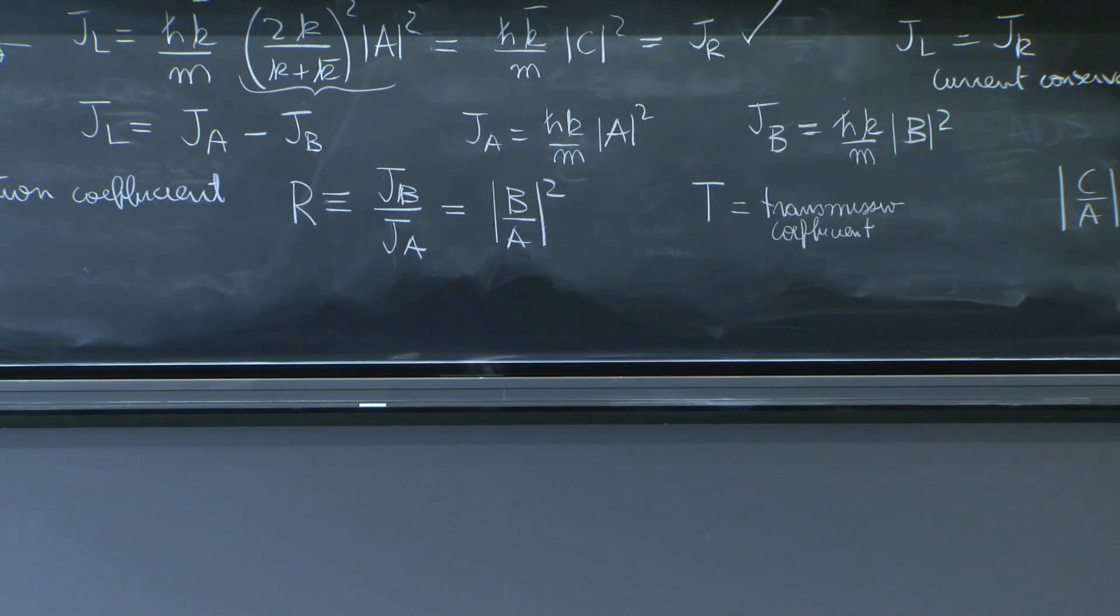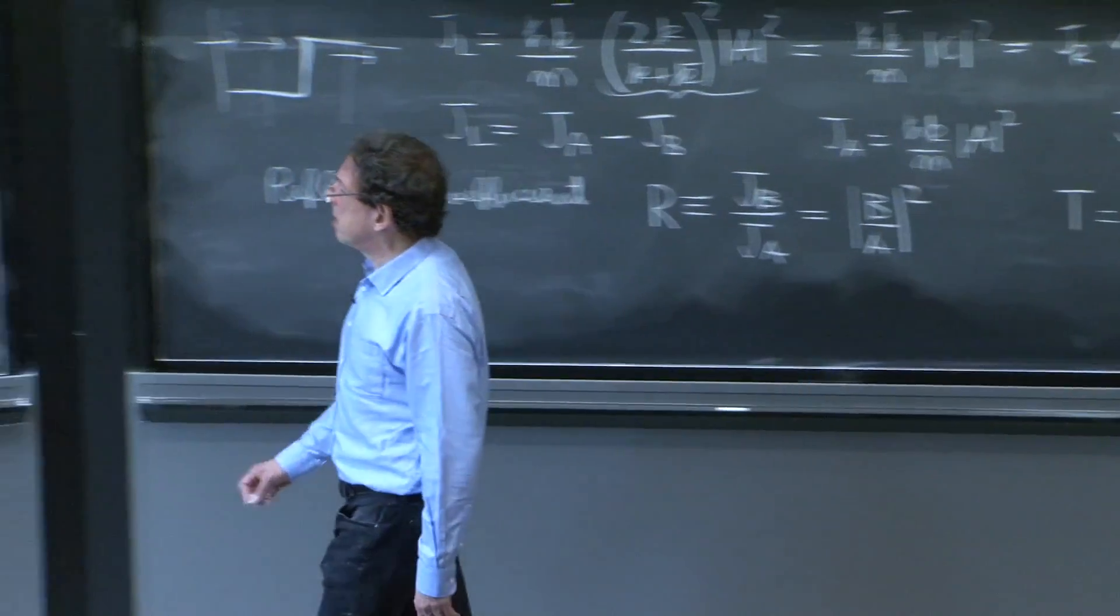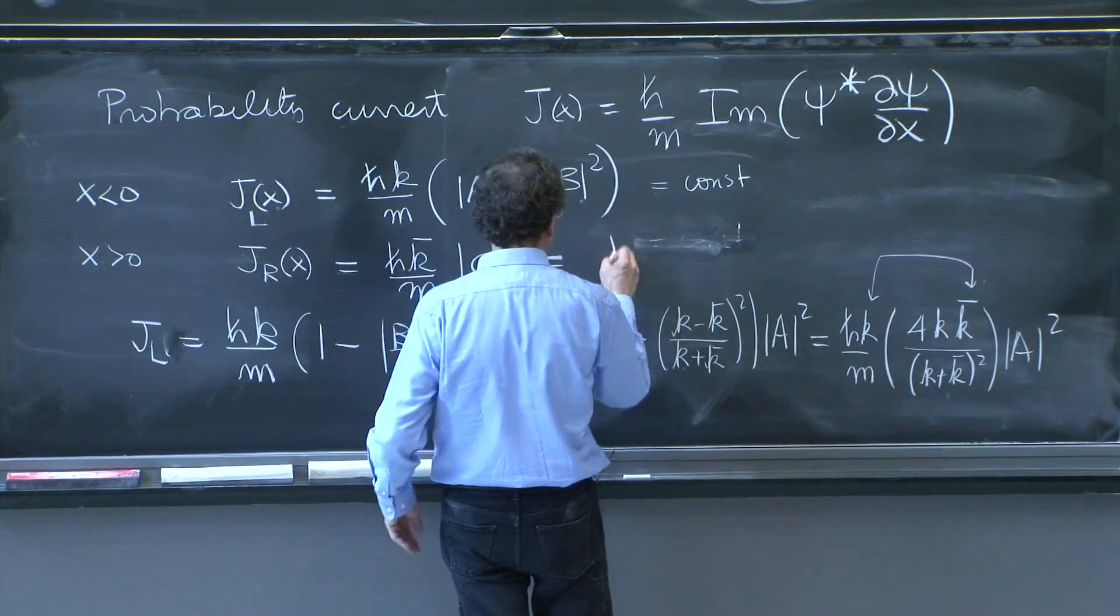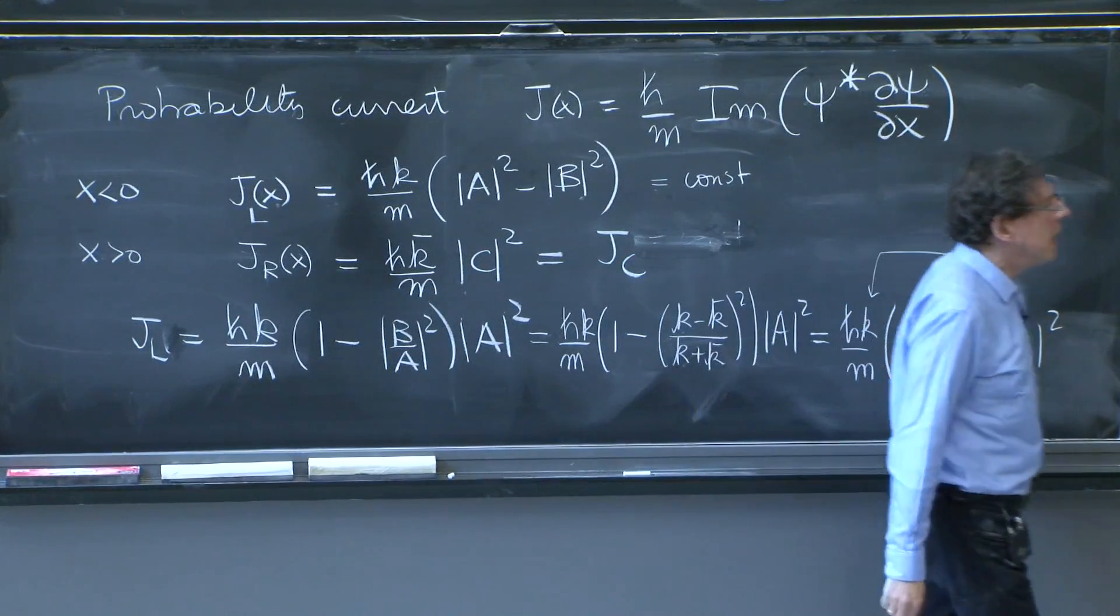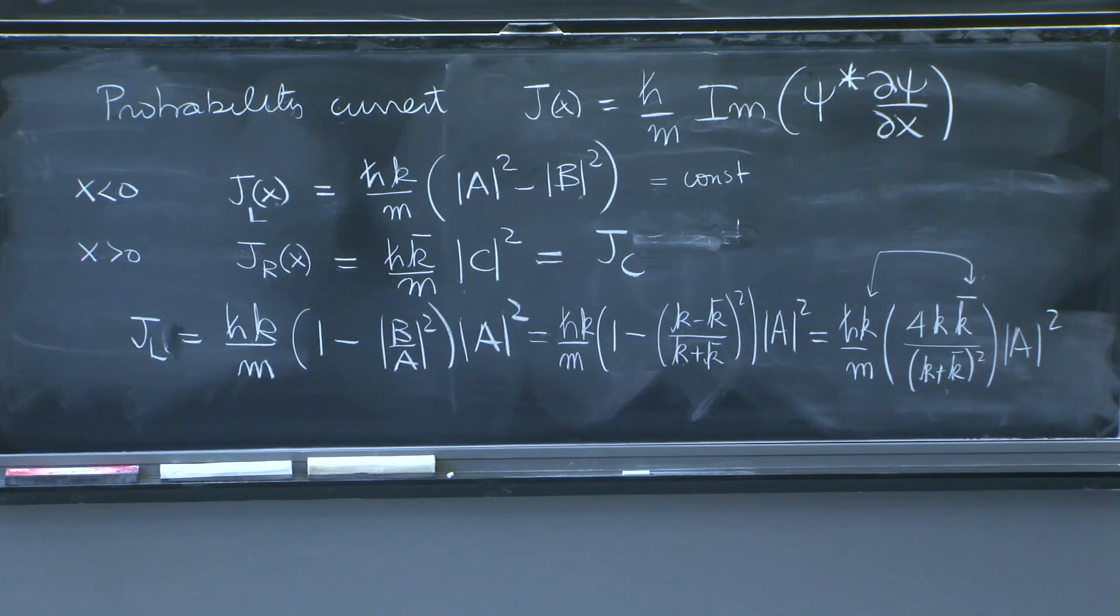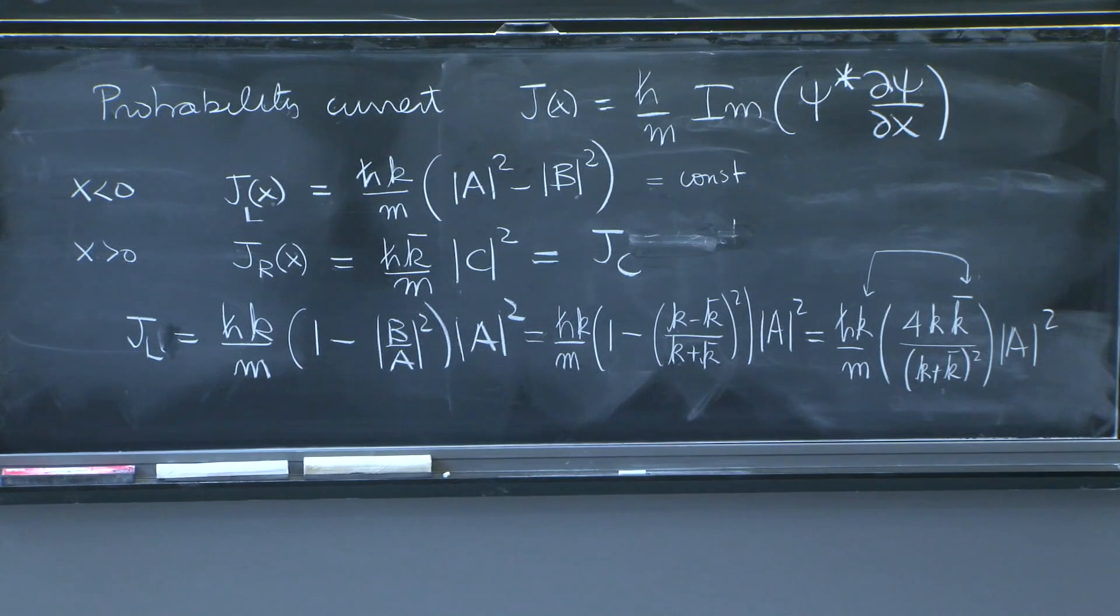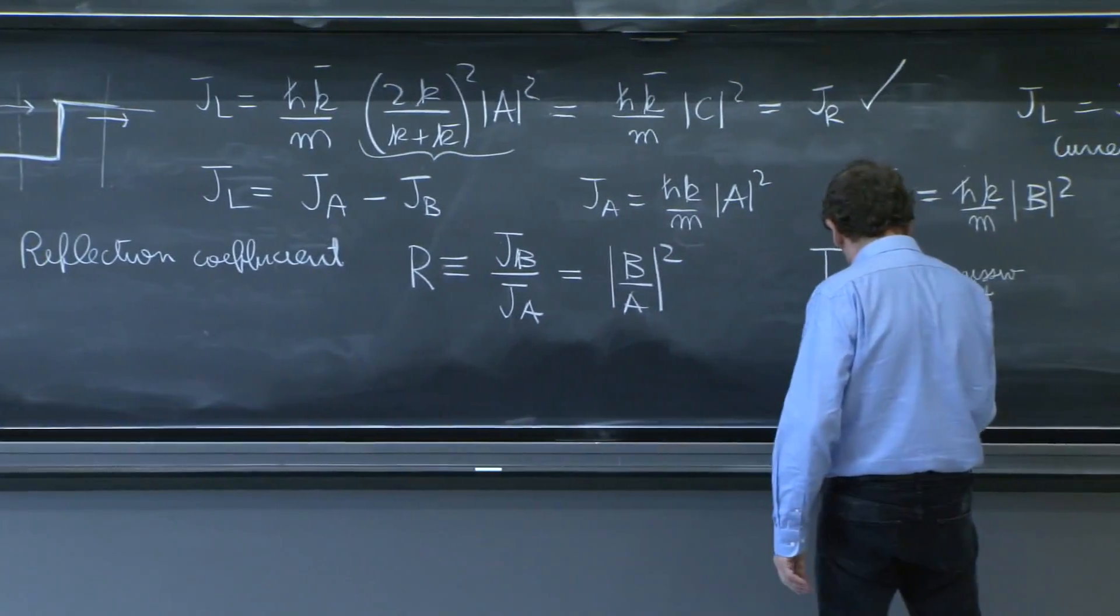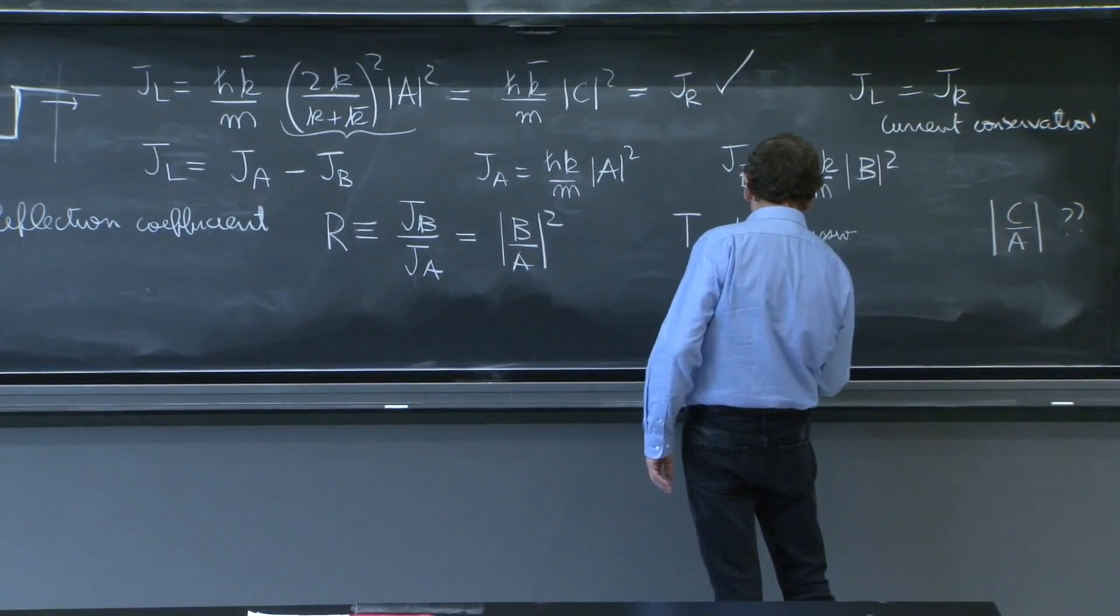And the reason is that I will call this current jc. And that's the amount of probability, because it's a current associated to the wave c. And that's the amount of probability that is being carried by the transmitted wave. That is the probability, not necessarily c over a. So the transmission coefficient will be defined to be jc divided by ja.